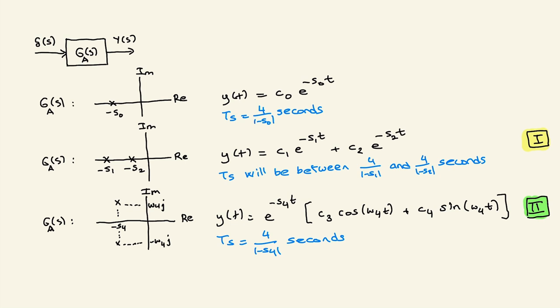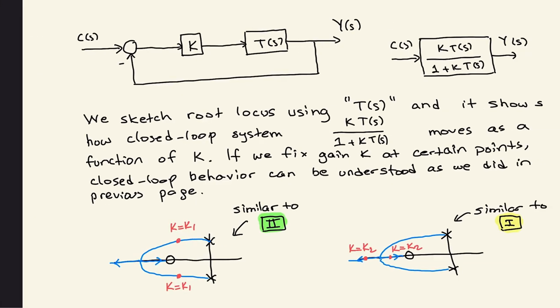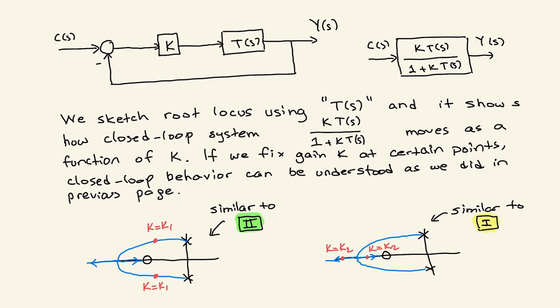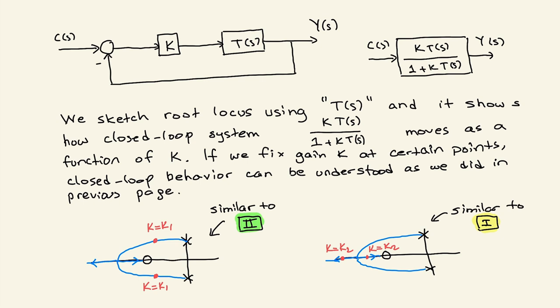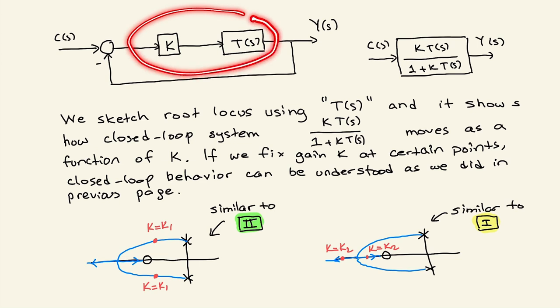Let's call it Case 1 when you have two real poles, and Case 2 when you have two complex poles. Now let's look at this block diagram. We sketch the root locus using the forward loop transfer function, and it shows how the closed-loop system poles move as a function of gain k. If we fix gain k at certain points, the closed-loop behavior can be understood as discussed on the previous page.